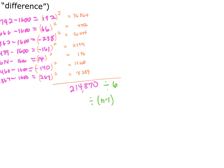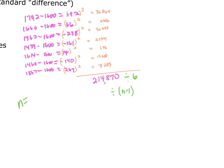We always divide by one less than however many values there are in the data set. That's what's referred to as the degrees of freedom — it's a statistical thing where dividing by n minus one helps get us a better, more accurate standard deviation. So we're always going to divide by one less than however many values there are. When we divide by six, we get 35,811.6 repeating.